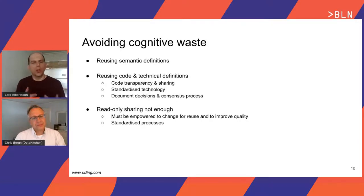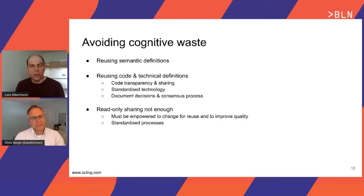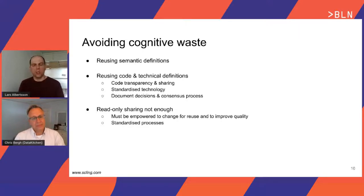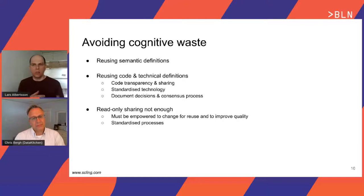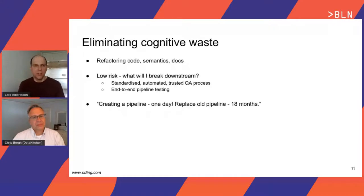Being rigid and making it hard to change things makes it difficult to address the waste. In order to avoid waste, what can you do to prevent it from the beginning? Reuse — if someone else has defined the way to store time or define semantics, and it's easy to reuse that definition, you'll have less waste. But for things to be easy to reuse, you must be able to find documentation and also be able to change them to fit your needs. Read-only sharing is not sufficient; you need write capacity.